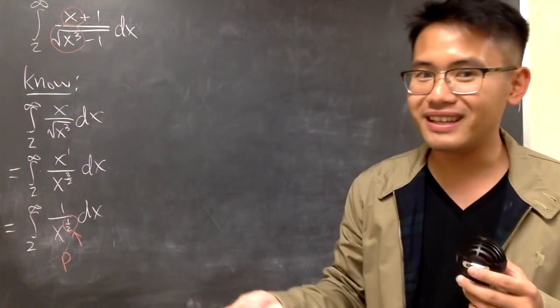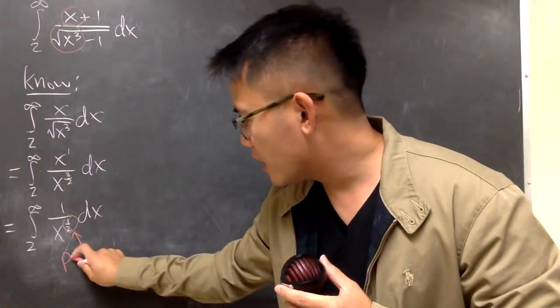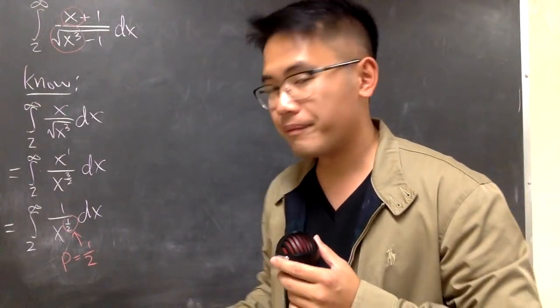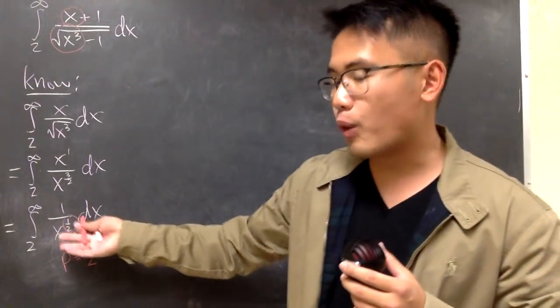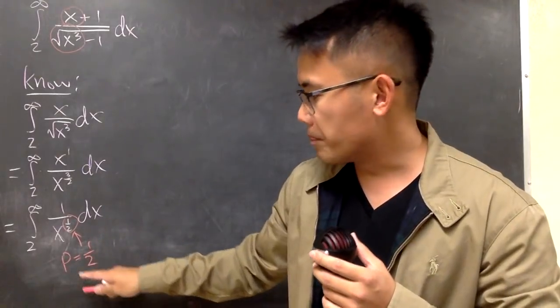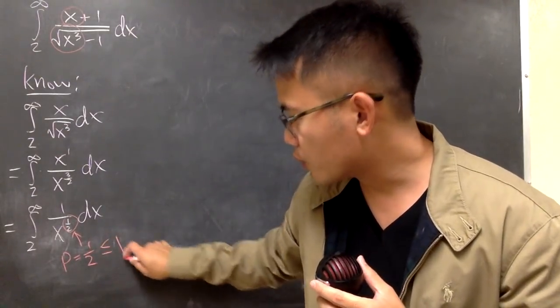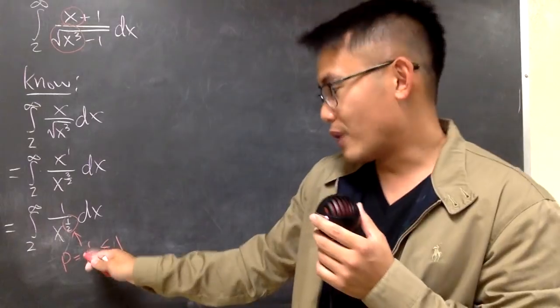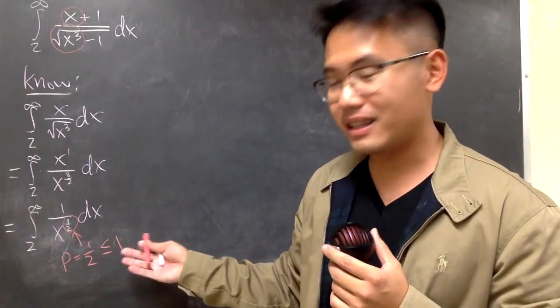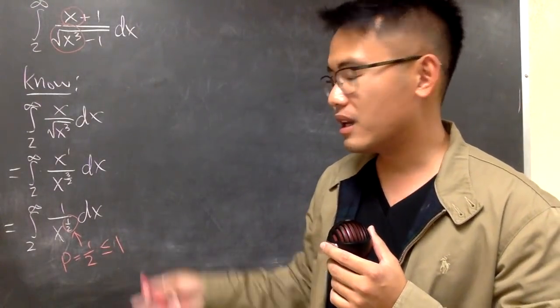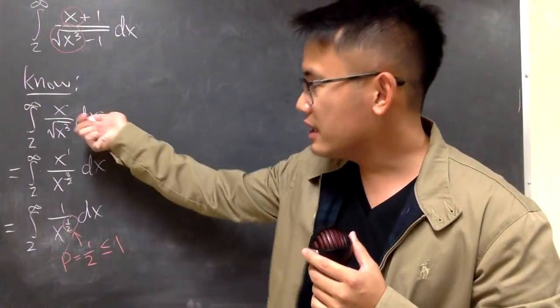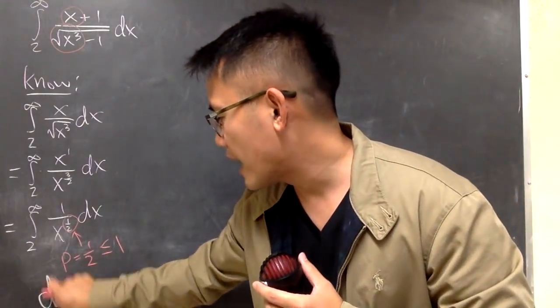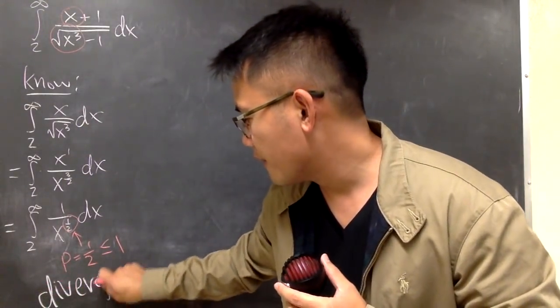This is the p integral for the p test. p right here is 1 half, and this is the type 1 improper integral. When p is less than or equal to 1, which we have, 1 half, it is less than or equal to 1. This will tell us this improper integral actually diverges.